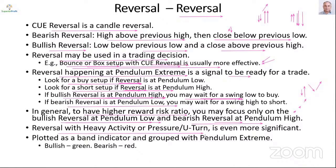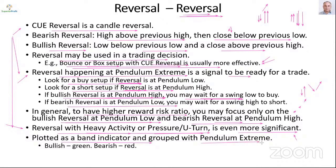We can add to the signals one by one to make them more significant as a whole. First we have a reversal, then we see if it is happening at pendulum extreme, then we see if we have heavy activity or pressure — all these signals adding more and more forces in the direction of our trade. Reversal is plotted as a band indicator grouped with pendulum extreme, because we like to find reversal at pendulum high or low. Bullish reversal is green, bearish reversal is red.